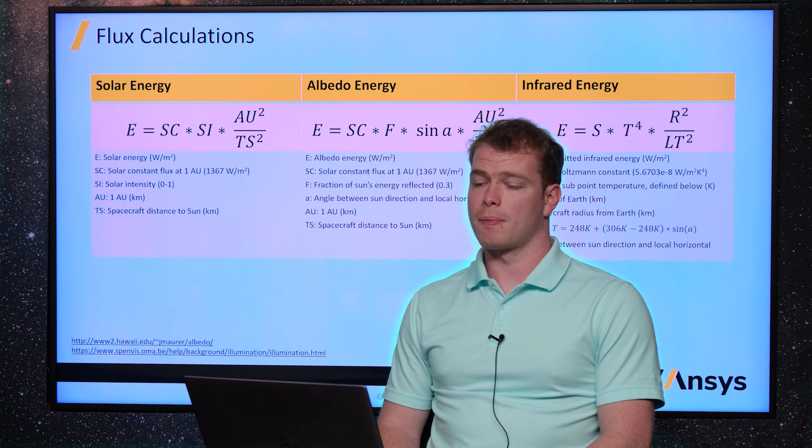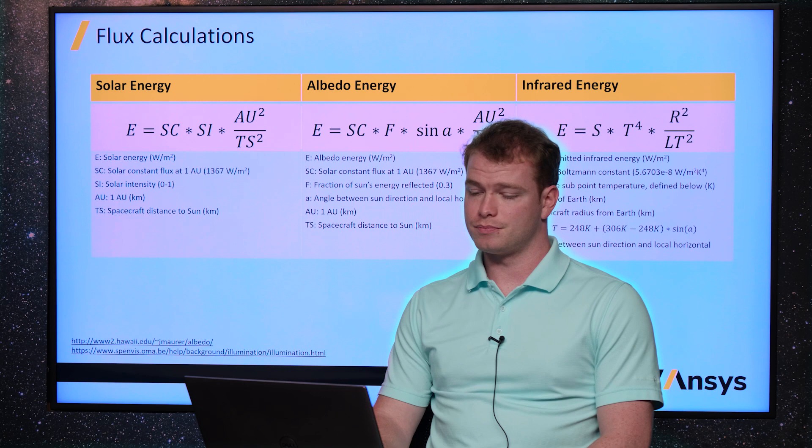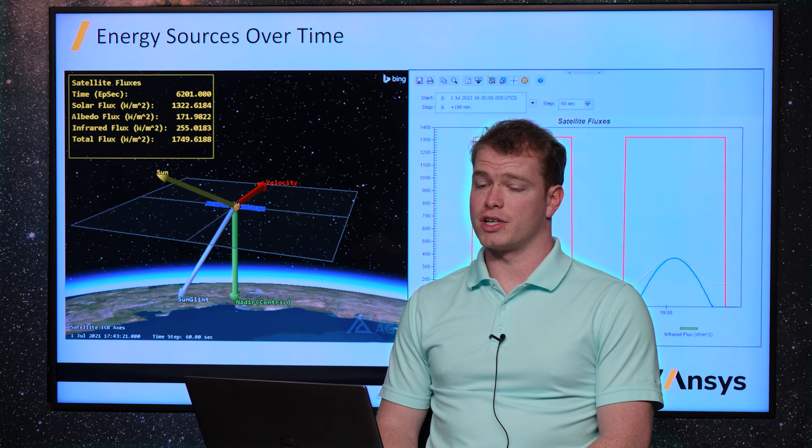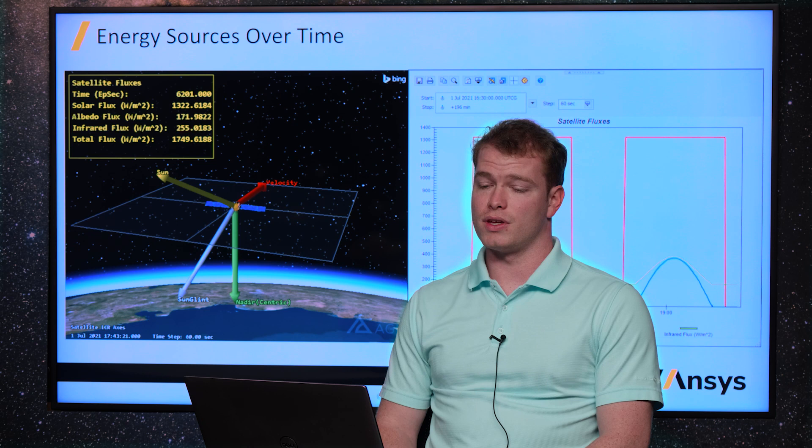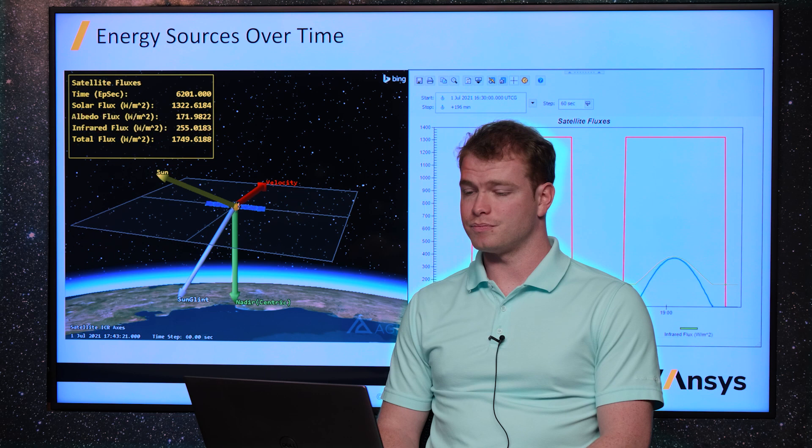These are dynamically updated throughout the satellite's orbit depending on the location of the satellite and the energy sources. For example, we can see this in our satellite's orbit in the screenshots here. On the left is just a single moment in time where we can see the values of the fluxes impacting the satellite as well as the direction they come from.